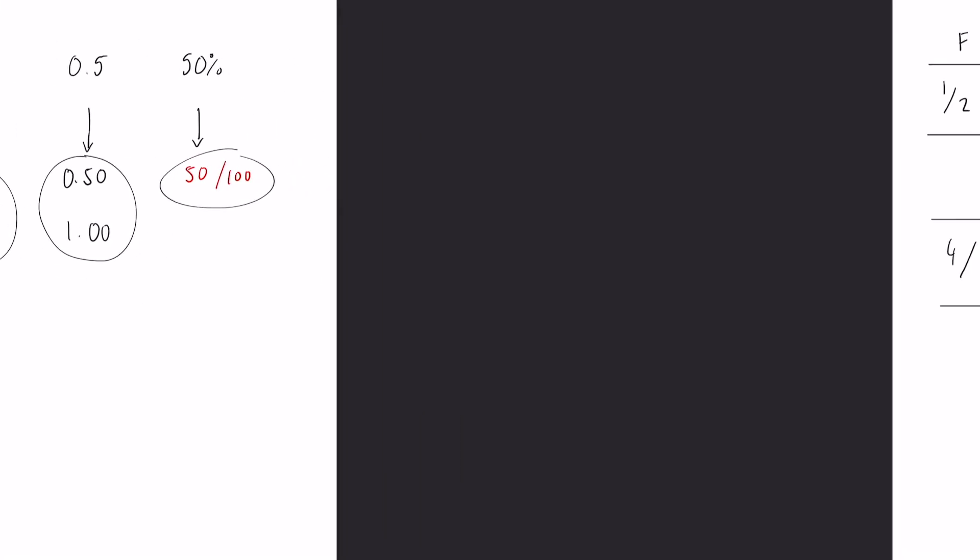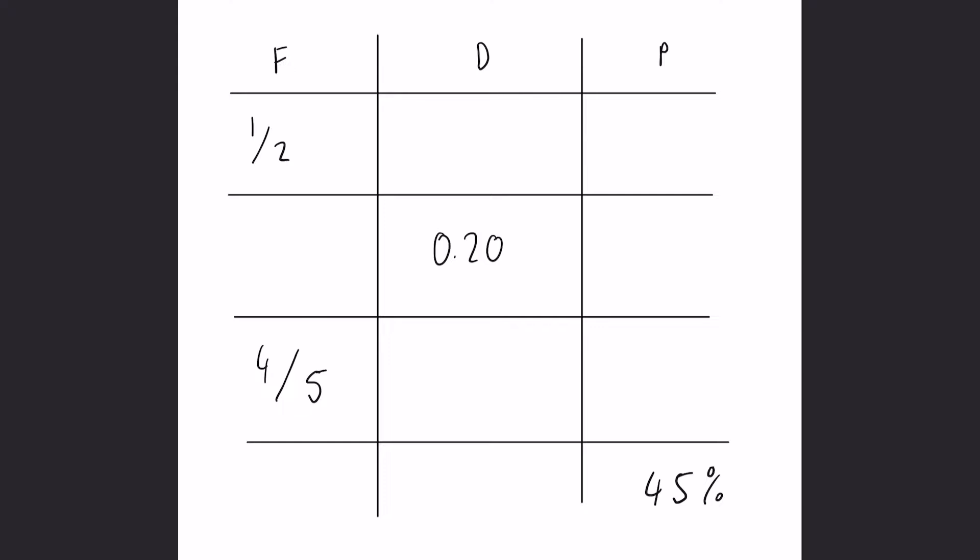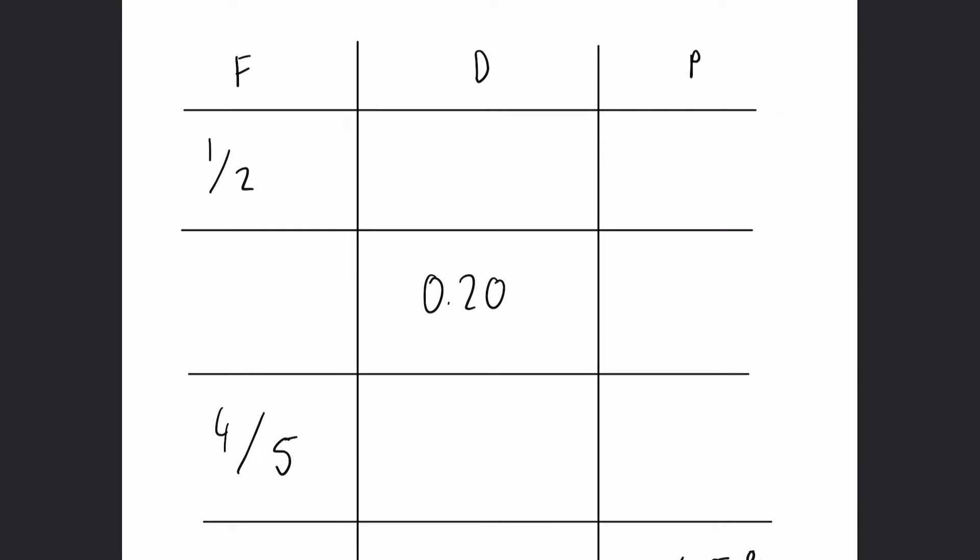So we're going to look at a table and we basically have to fill in the missing values. This is a very common GCSE type question to get. So again, very important that you understand what you're doing. So fractions, the first one we have is a half and just like the example before, if we make that equal to 50 over 100, we know that we can write this as a decimal as 0.50 or 0.5, and a percentage is just going to be 50%.